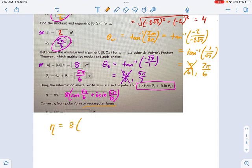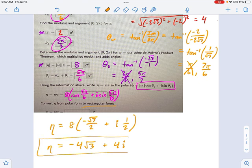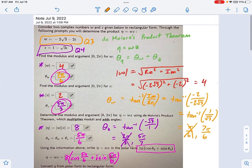5 pi over 6, that's going to be negative radical 3 over 2. And the sine of 5 pi over 6 is just 1 half. So that's my rectangular form. Let's simplify it a little bit. This becomes negative 4 root 3 plus 4i. That is the rectangular result of multiplying these two complex numbers.